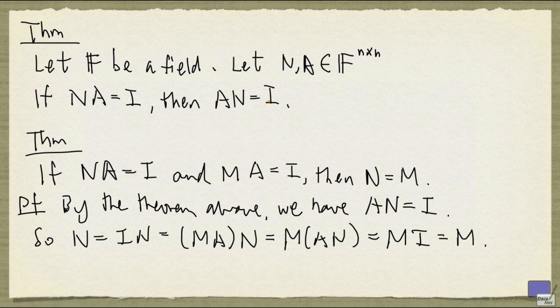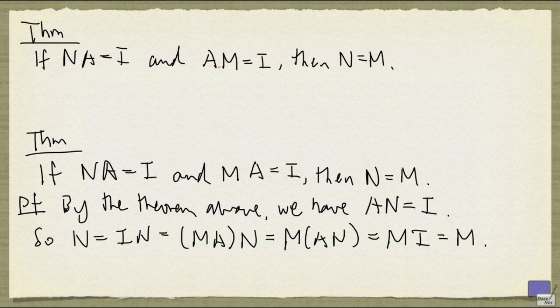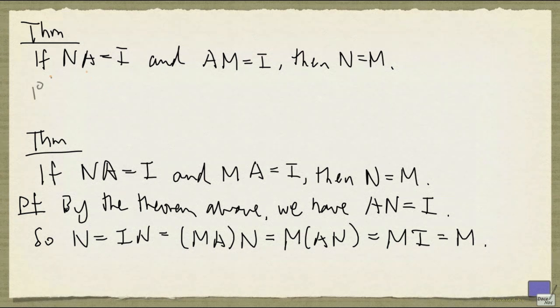And the next result is similar. If you have a left inverse and a right inverse, then they must be equal. So if N times A equals I, and A times M equal to I, then N is equal to M. So again, all matrices are N by N.